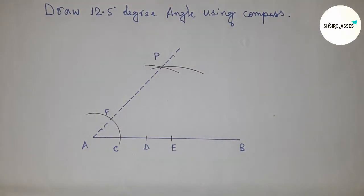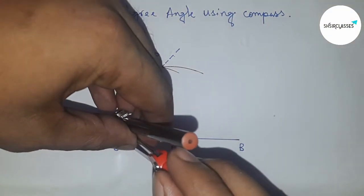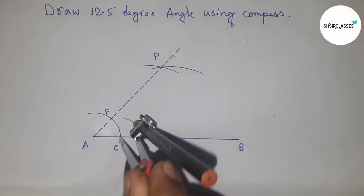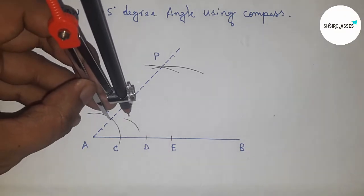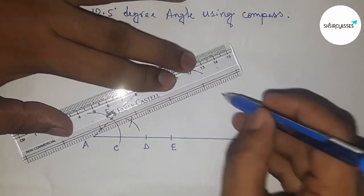Next, to construct a 25 degree angle, take greater than half of arc CF and draw an arc here. Put the compass with the same length and draw an arc which cuts the first arc. Now join this.